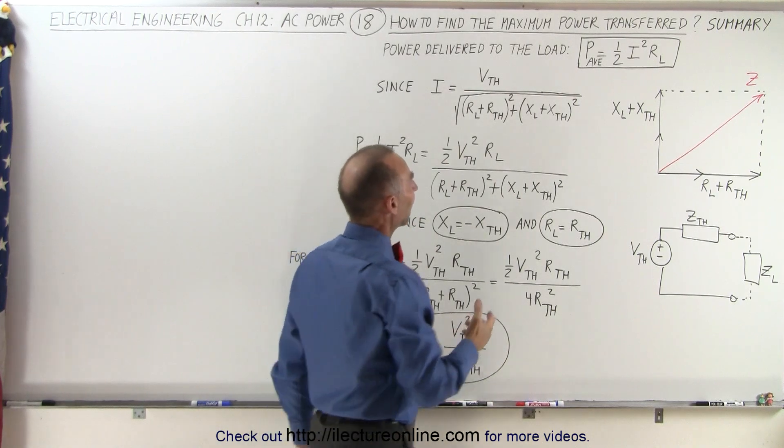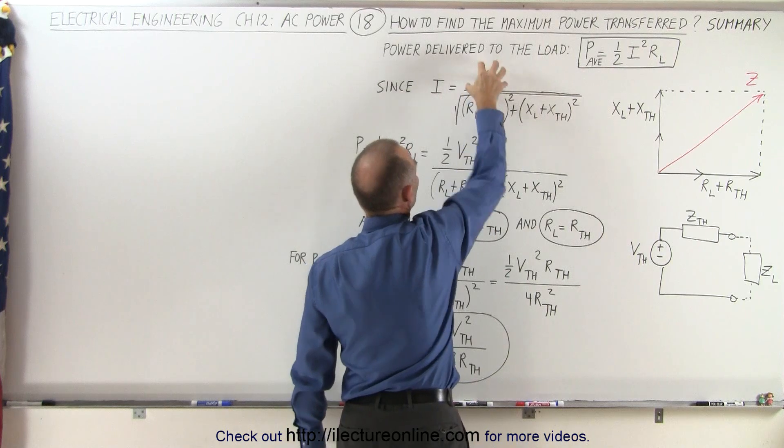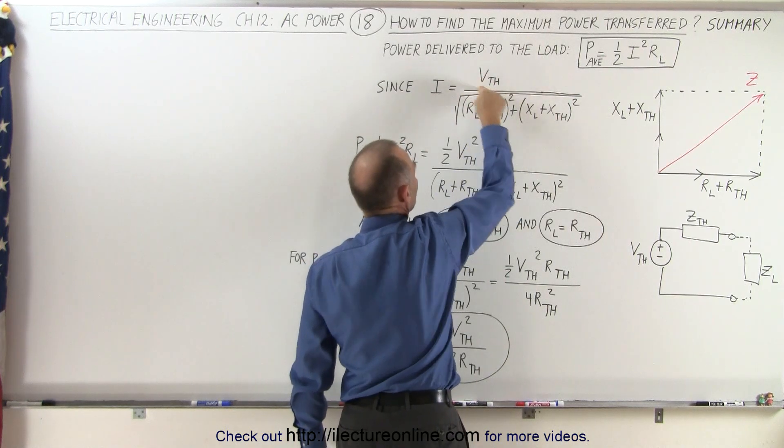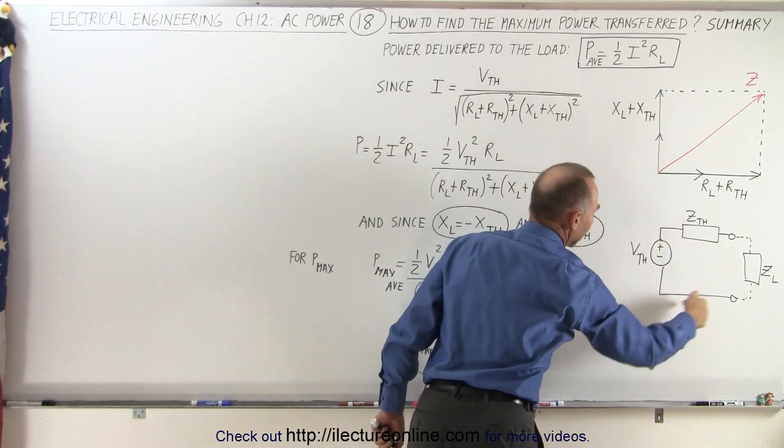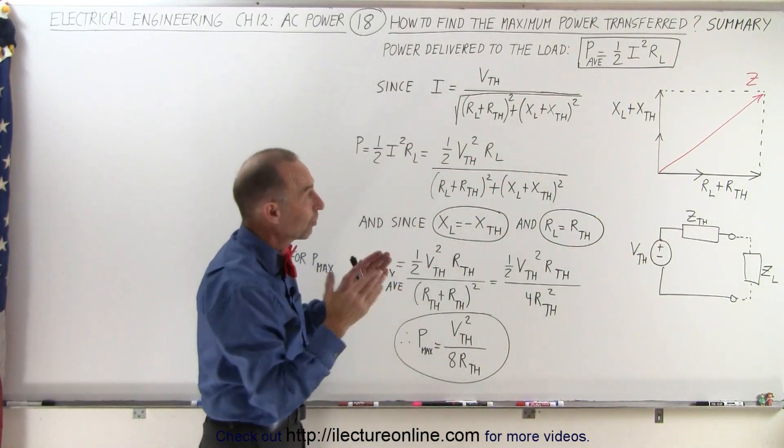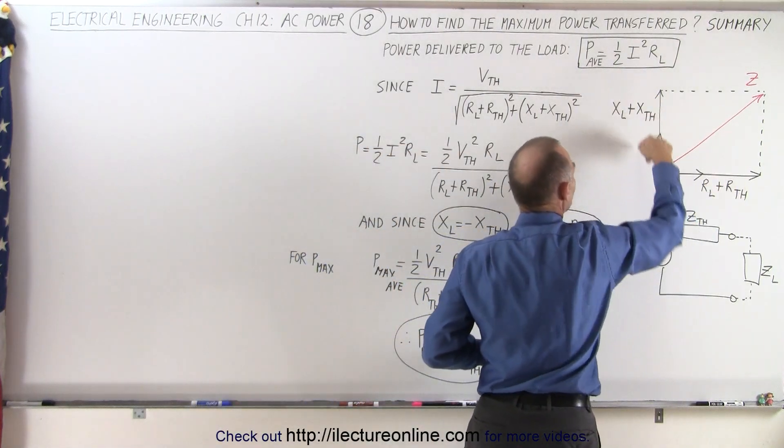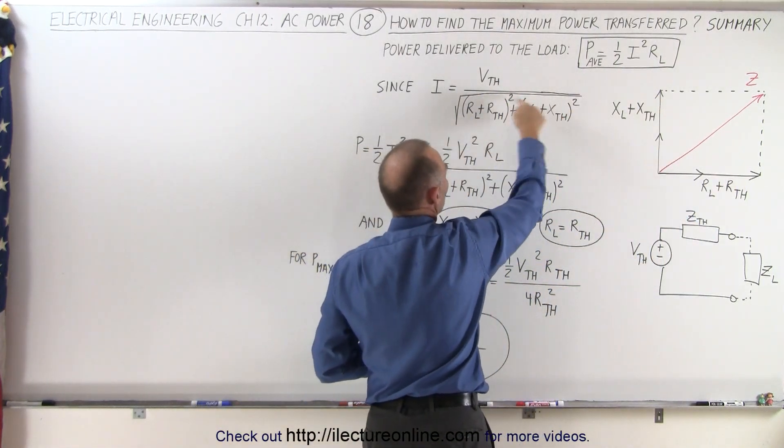If we then realize that the current in here can be defined as the voltage divided by the impedance, it'll be the Thevenin voltage that's applied by the circuit and the impedance which can be found by taking the square root of the sum of the squares of the two legs, the resistance leg and the reactance leg. That gives us the total impedance.